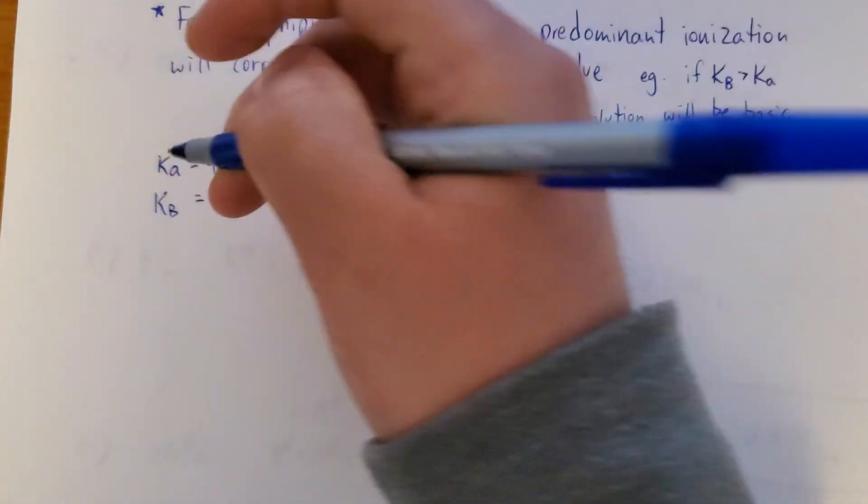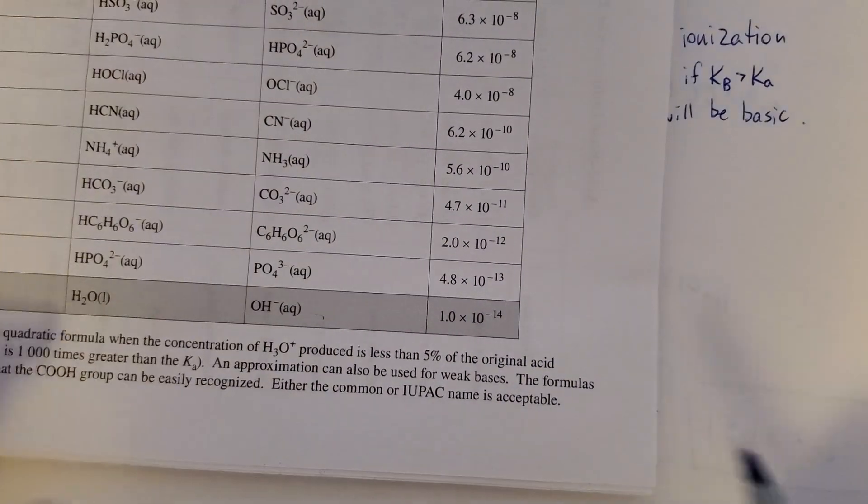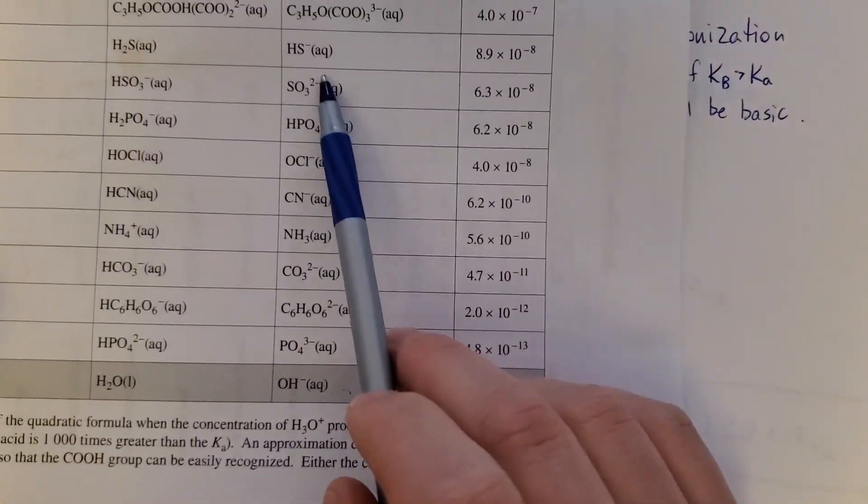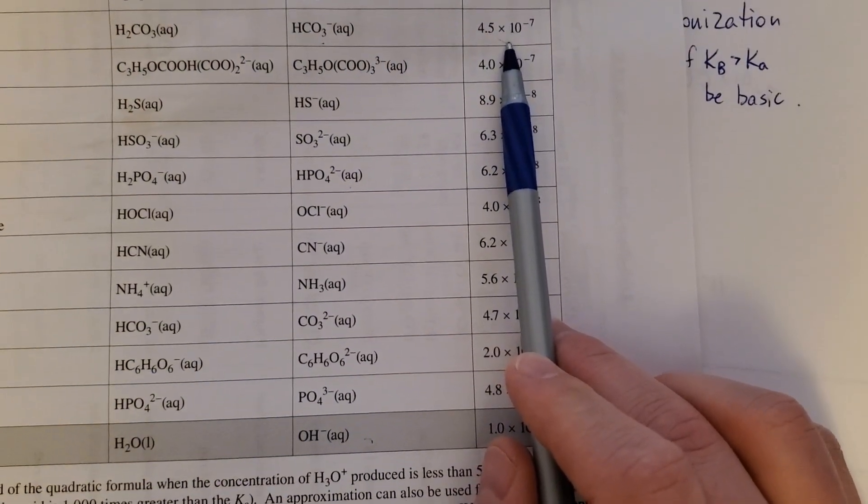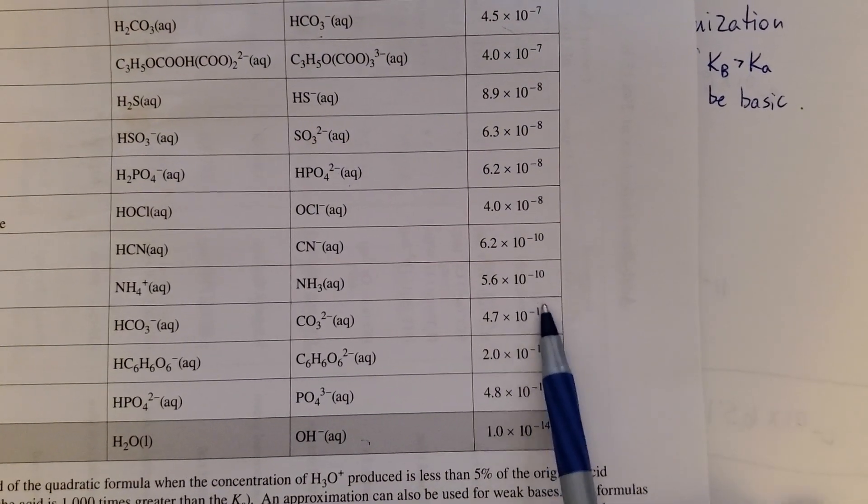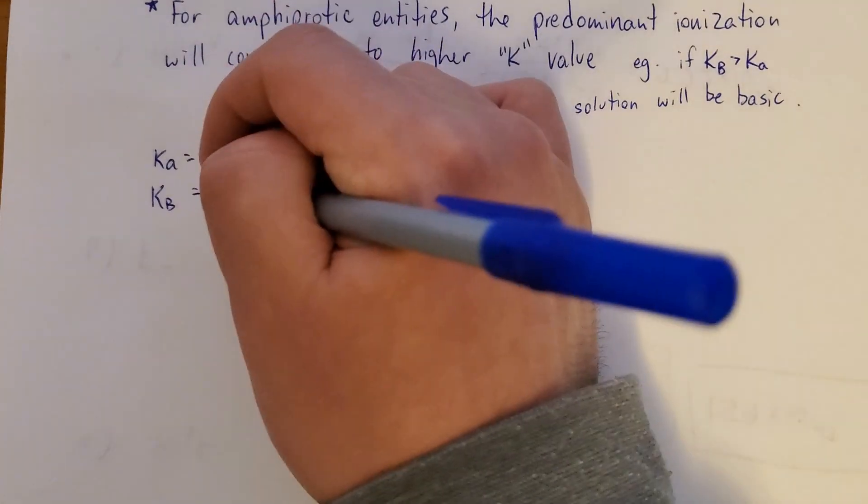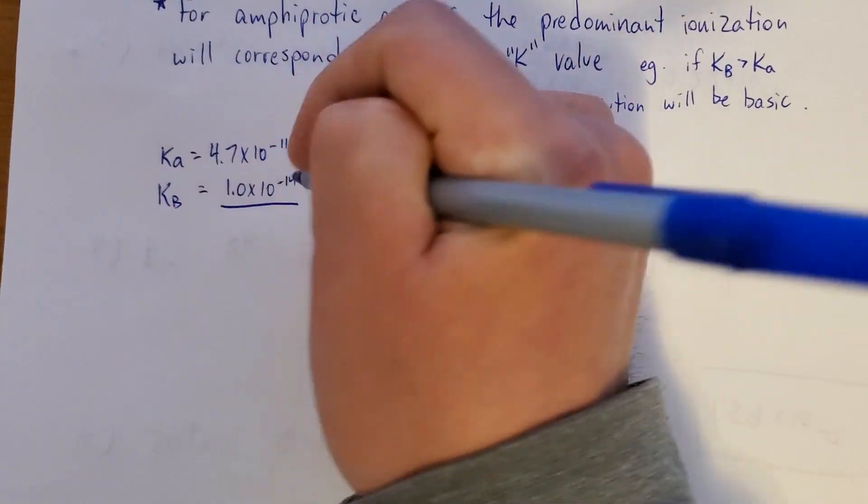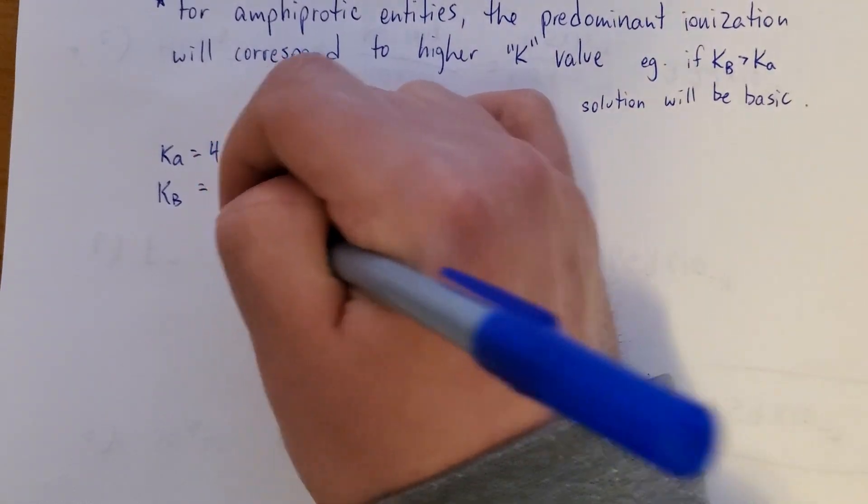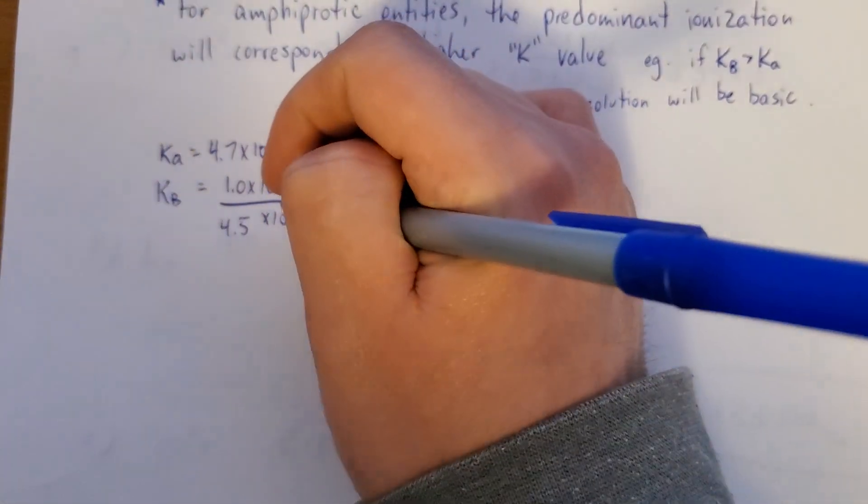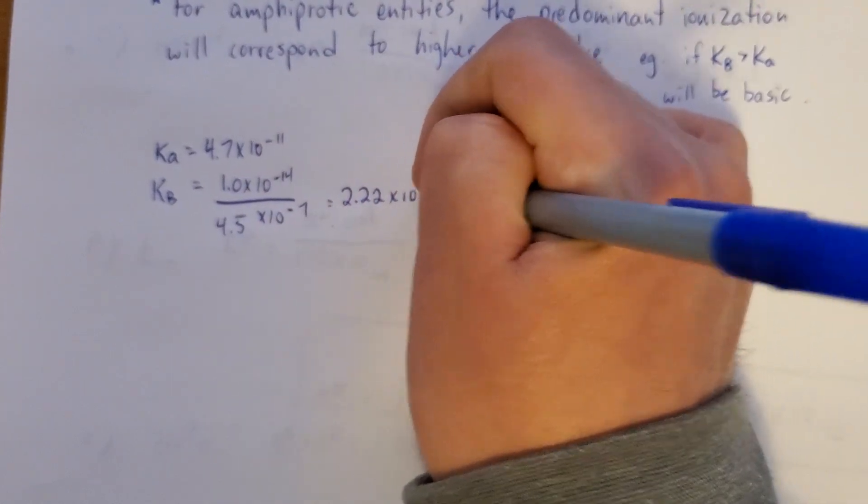Okay, we actually just calculated KB for this, but I'll do it again. So a reminder, use HCO3 on the base side. It's KW divided by that. All right, do not divide by this. Divide by this. Okay, and that's still 2.22 times 10 to the negative 8.